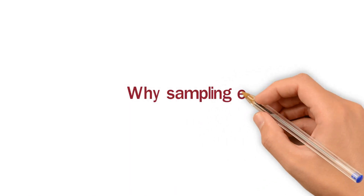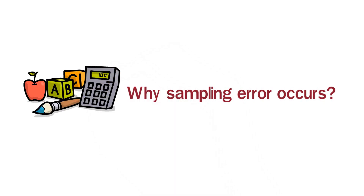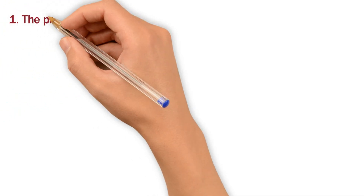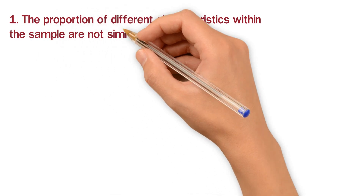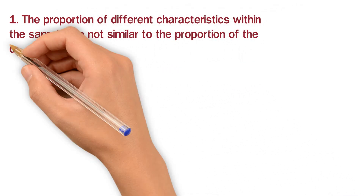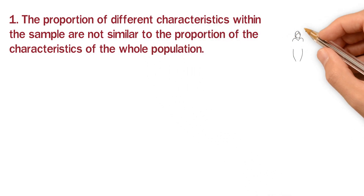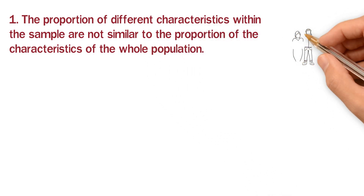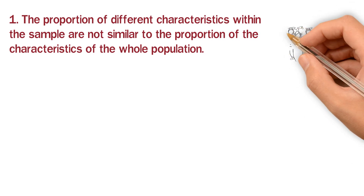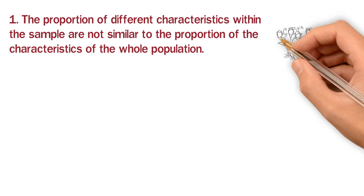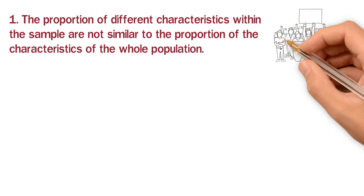The next question is: why does a sampling error occur? We have some different reasons. The first reason is that the proportion of different characteristics within the sample are not similar to the proportion of the characteristics of the whole population — meaning the individuals' characteristics of the whole population have not been properly represented in your sample. In this case, we have a sampling error.